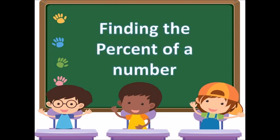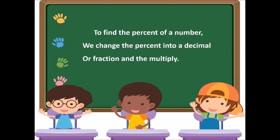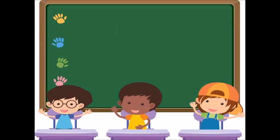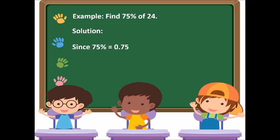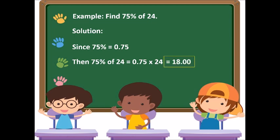Finding the percent of a number. To find the percent of a number, change the percent into a decimal or fraction and then multiply. For example, find 75% of 24. Since 75% equals 0.75, we calculate 0.75 times 24. The answer is 18.